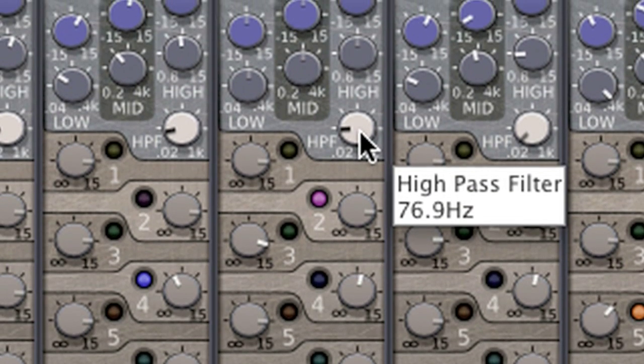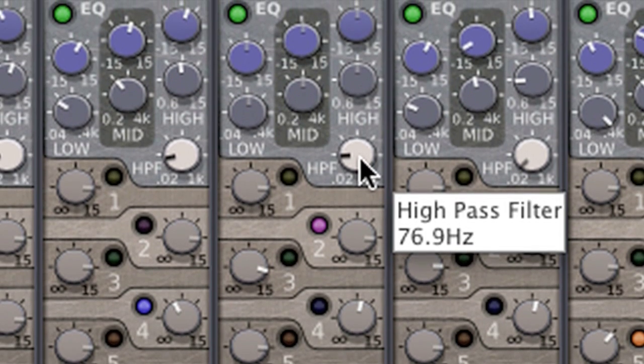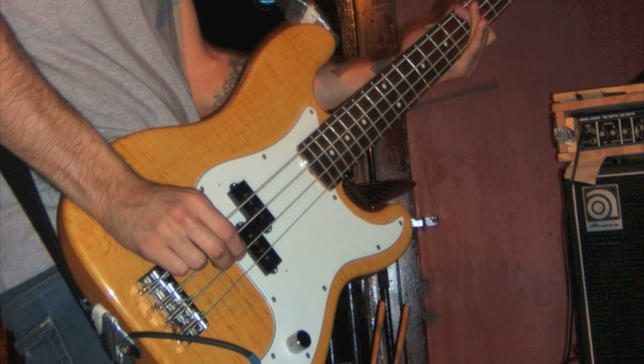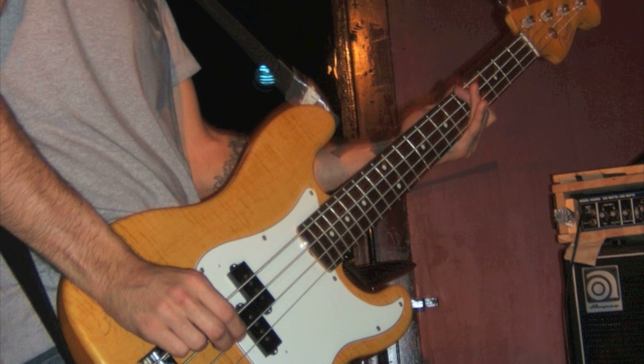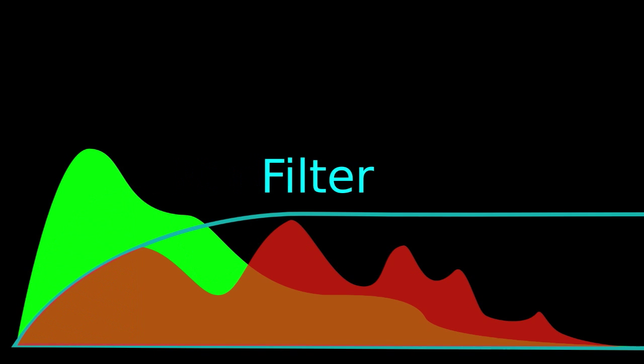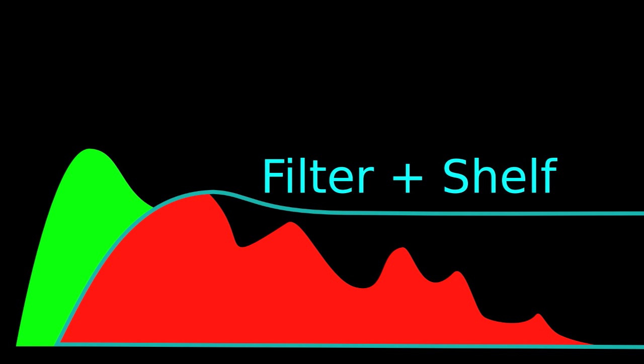The combination of a low-frequency EQ and high-pass filter can clean up sub-low energy while boosting mid-bass — a technique I like to use with bass guitars. Here is a visual representation of the frequency response of my kick drum and bass guitar. There's a lot of mud in the low-end where these two instruments overlap. I can high-pass my bass above the low-end thump of the kick drum and accentuate the frequencies just over the filter, creating a nice low-end bump so the bass doesn't sound thin even though the bottom end is filtered off.